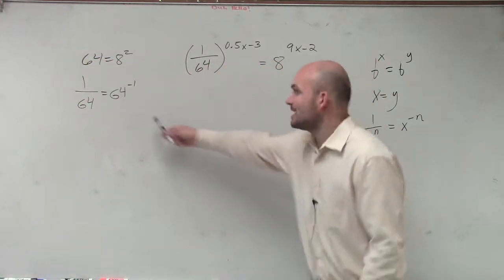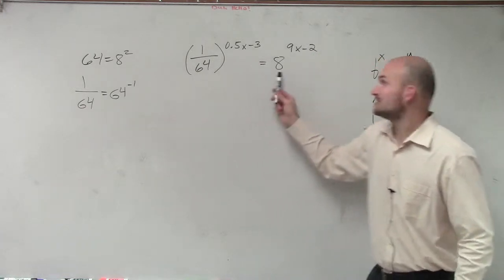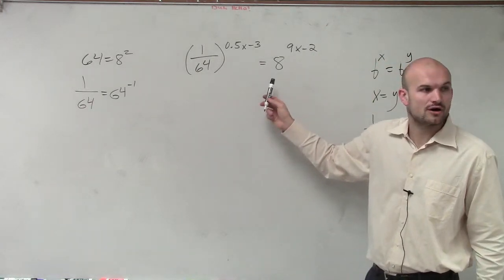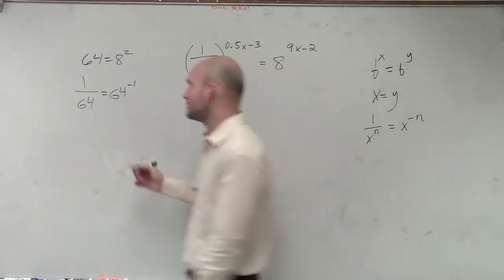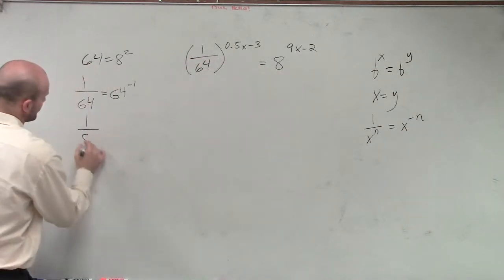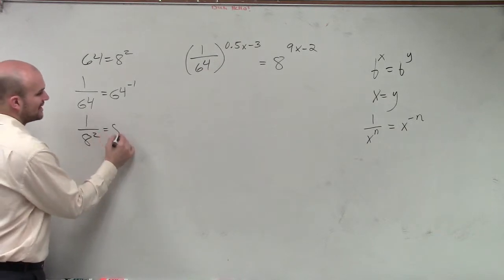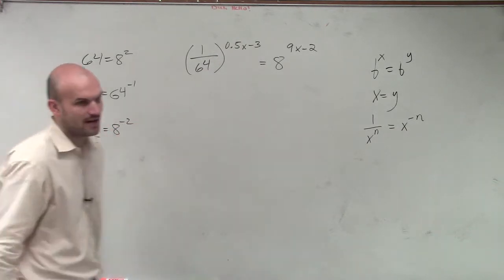Now, that still gives you a whole number, but it still doesn't give you a base that's equal to the base on the other side of the equation. However, I could rewrite this now as 1 over 8 squared, which should now be 8 to the negative second power.